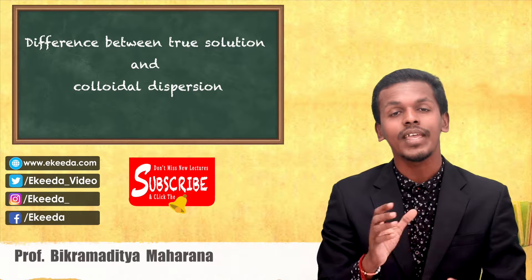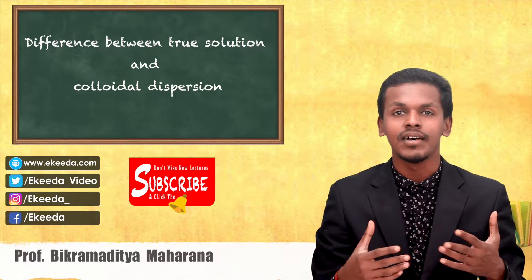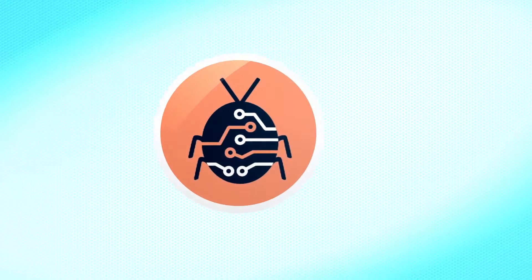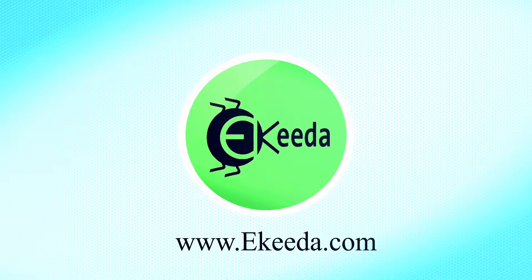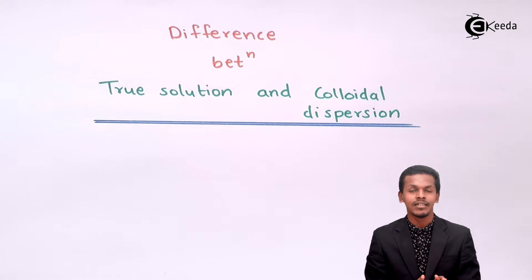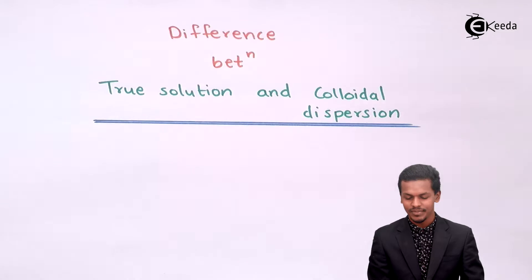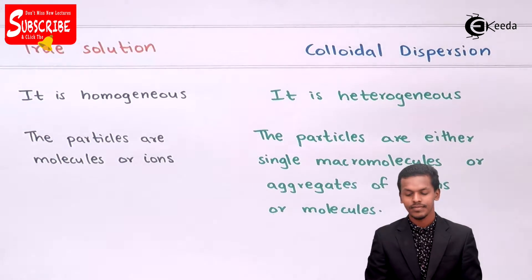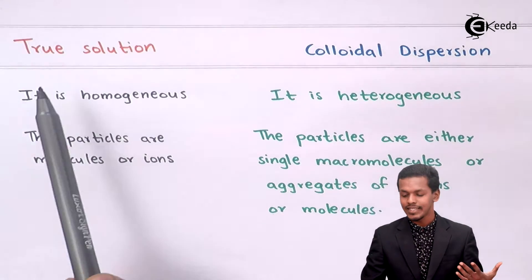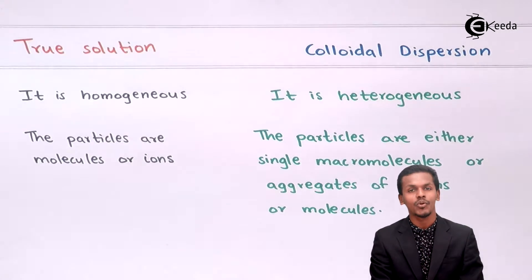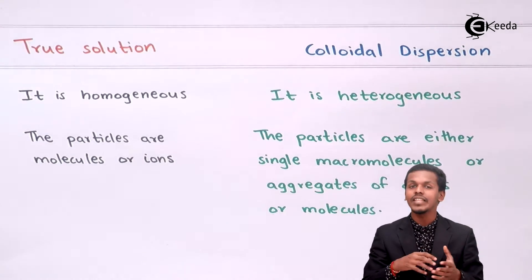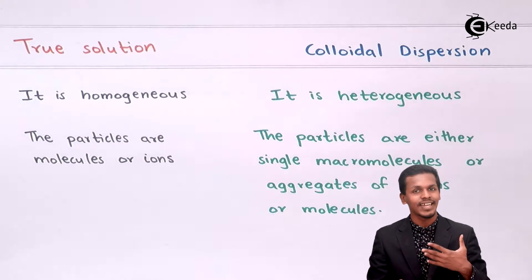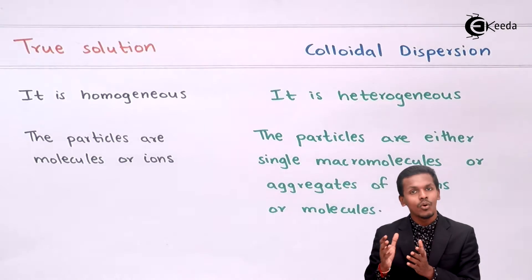What are the basic points behind that, and how can they be different from each other in spite of having the same kind of properties? The first thing is related to the homogeneous phase. True solutions are basically a homogeneous phase. For example, if alcohol dissolves in water — both are liquid phase — they mix to form a continuous phase, which is known as a homogeneous phase. That is only applicable in true solutions.